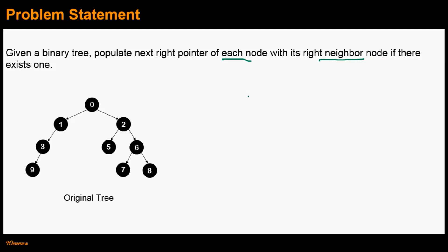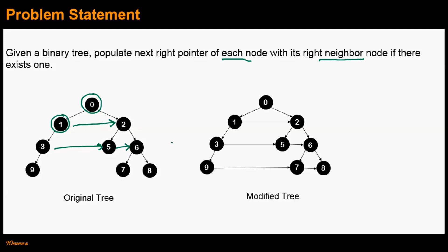For example, if this is the given tree, then for node 0 there is no right neighbor, therefore its next right pointer will be null. For node 1, its right neighbor node is node 2, and therefore the next right pointer for node 1 will point to node 2. Similarly, the next right pointer for node 3 will point to node 5, and for node 5 it will point to node 6. Overall, the modified tree after populating the next right pointer of each node will look like this.